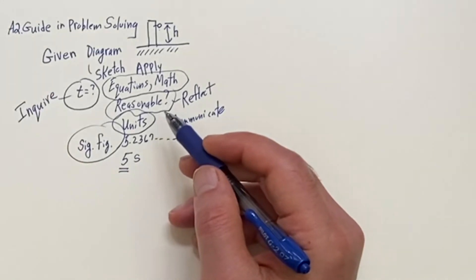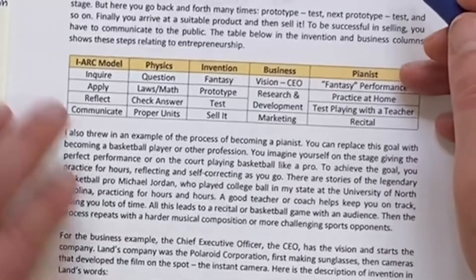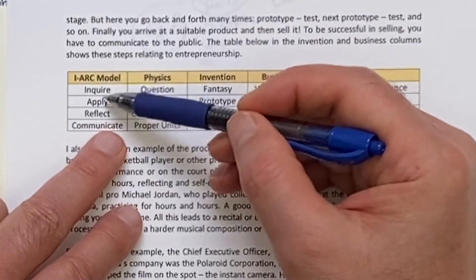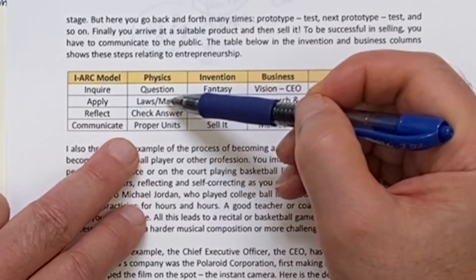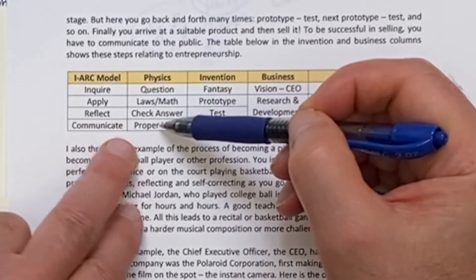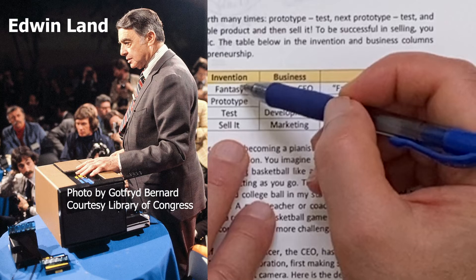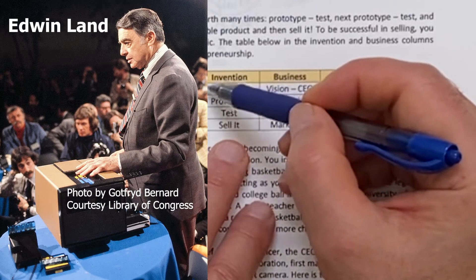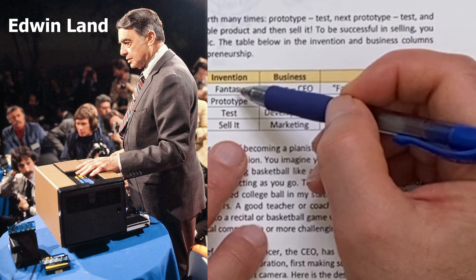Let me show how this applies in other fields. Here I have a chart of the Inquiry Arc model — inquire, apply, reflect, communicate. For physics: the question, the laws and math, checking the answer, and proper units with significant figures. For invention, Edwin Land said when he wants to invent something he has a fantasy of something perfect — so the fantasy becomes the question.